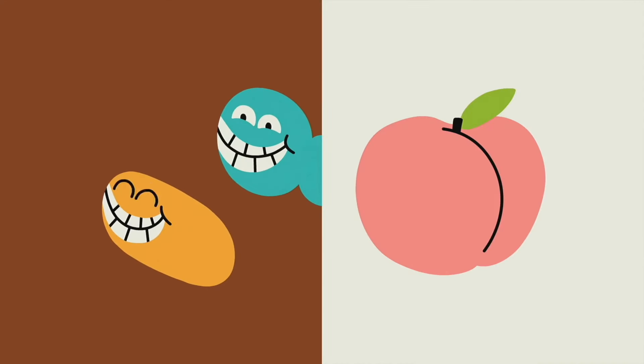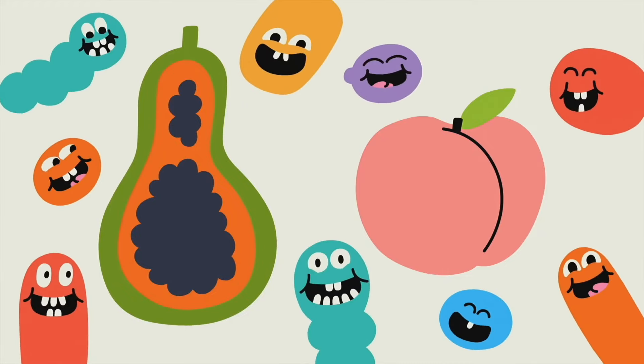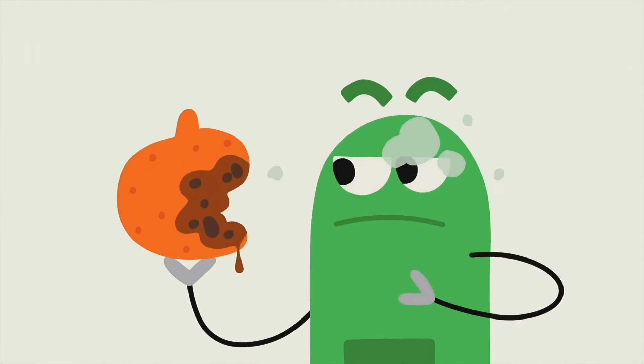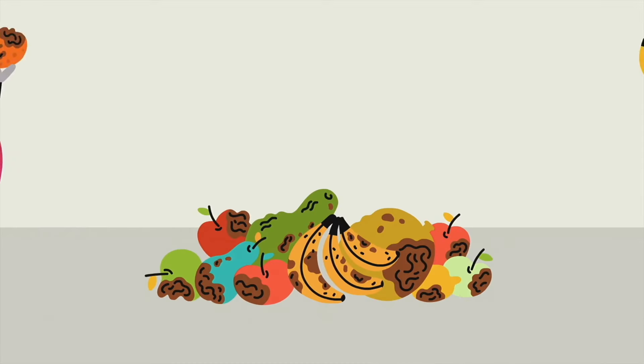Because the teeny tiny critters just eat, eat, eat through a peach or papaya, and it's really a treat! When the fruit goes soft or has a mushy spot, that's decomposition, in other words, rot.